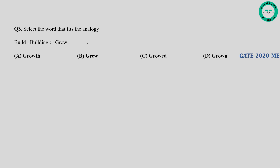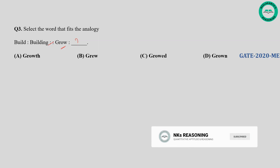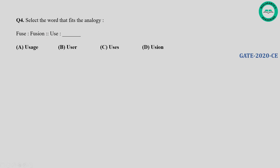Question number three: Select the word that fits the analogy — Build, Building, Grow, blank. In the given analogy, the relationship is that building is the result or product of the action build. Similarly for grow, the term that represents the result of the action grow is grown. So option D is correct.